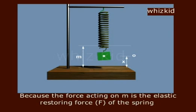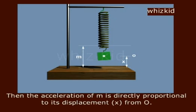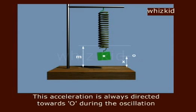The force acting on M is the elastic restoring force of the spring. The acceleration of M is directly proportional to its displacement from O. This acceleration is always directed towards O during the oscillation.